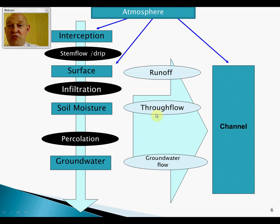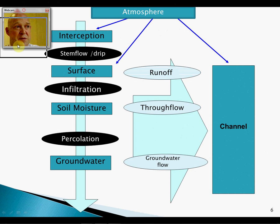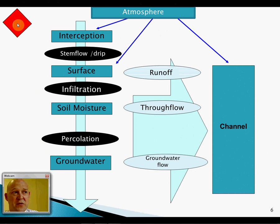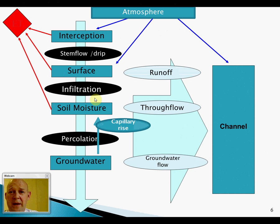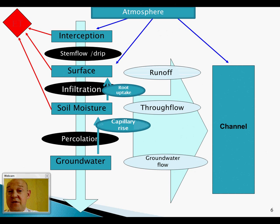Runoff is the fastest route to the channel; through flow is slower; groundwater flow the slowest. There is also an upward movement driven by warm air and sunshine — evapotranspiration — coming off plants, the surface, and puddles. In upper areas of the soil moisture store, water rises through very small pore spaces via capillary rise, from the saturated zone into the soil moisture store. Sandy soils won't support this well, but clay soils will; a loamy mix is best. Plants also extract water through root uptake, which also involves capillary rise.